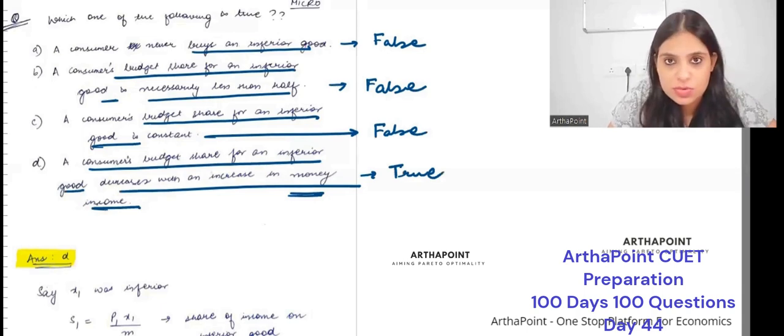So what are inferior goods? Inferior goods are those goods in which as your income increases, the demand of those goods decreases.